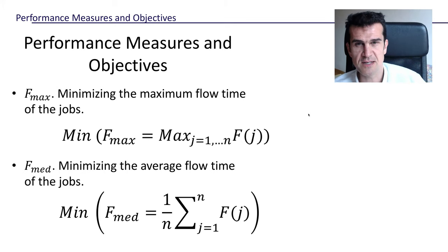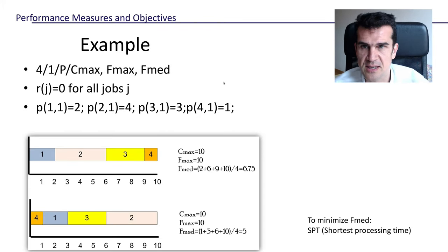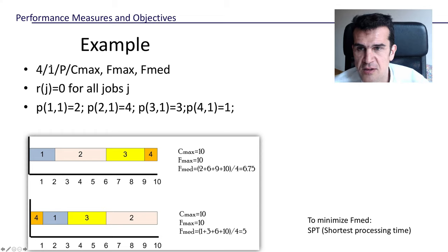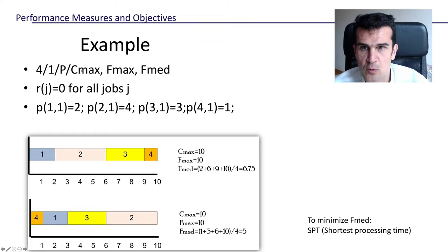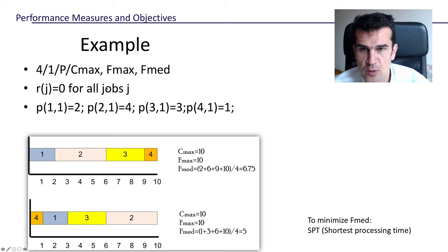We may also be interested in minimizing the average flow time F_mean, and this is a different objective. To illustrate this clearly with an example, assume we've got four different jobs that we want to complete and each of them has to go through just one machine. This is a single-machine problem and the only thing we have to decide is in which order we're going to process these four jobs. We're going to compute C_max, F_max, and F_mean for different orders.